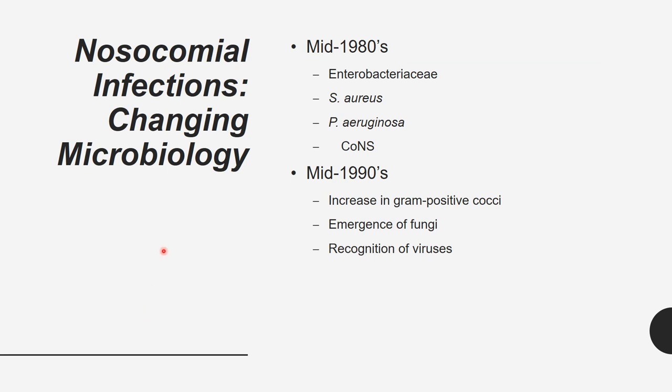Nosocomial infection microbiology has changed over time. In the mid-1990s, the main causative agents were gram-negative Enterobacteriaceae such as E. coli, Klebsiella, Shigella, Salmonella, as well as Staphylococcus aureus, Pseudomonas aeruginosa, and coagulase-negative Staphylococcus. Later there was an increased role of gram-positive cocci like Streptococcus pneumoniae, emerging fungi like Candida species, and recognition of viruses as causative agents.